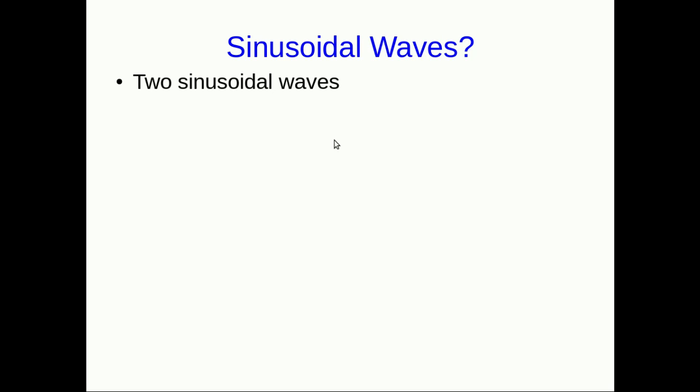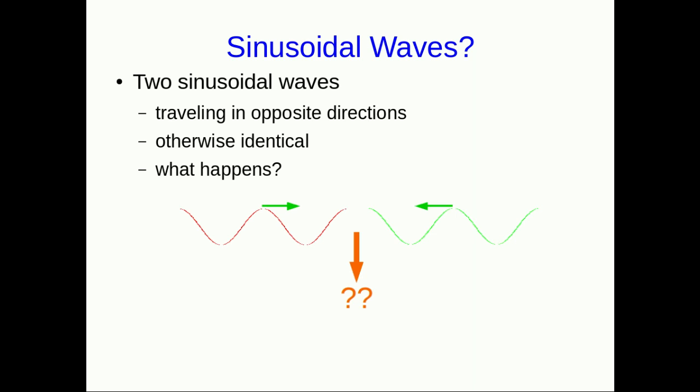All through talking about waves, sinusoidal waves have been important. And so we should stop and think about what happens with sinusoidal waves. So suppose we have two sinusoidal waves, and let's think about the special case where they are traveling in opposite directions. And they're otherwise identical—same size, same amplitude, same wavelength. And so they're going to interfere with each other as they propagate through each other like this. What happens? What does it end up looking like?